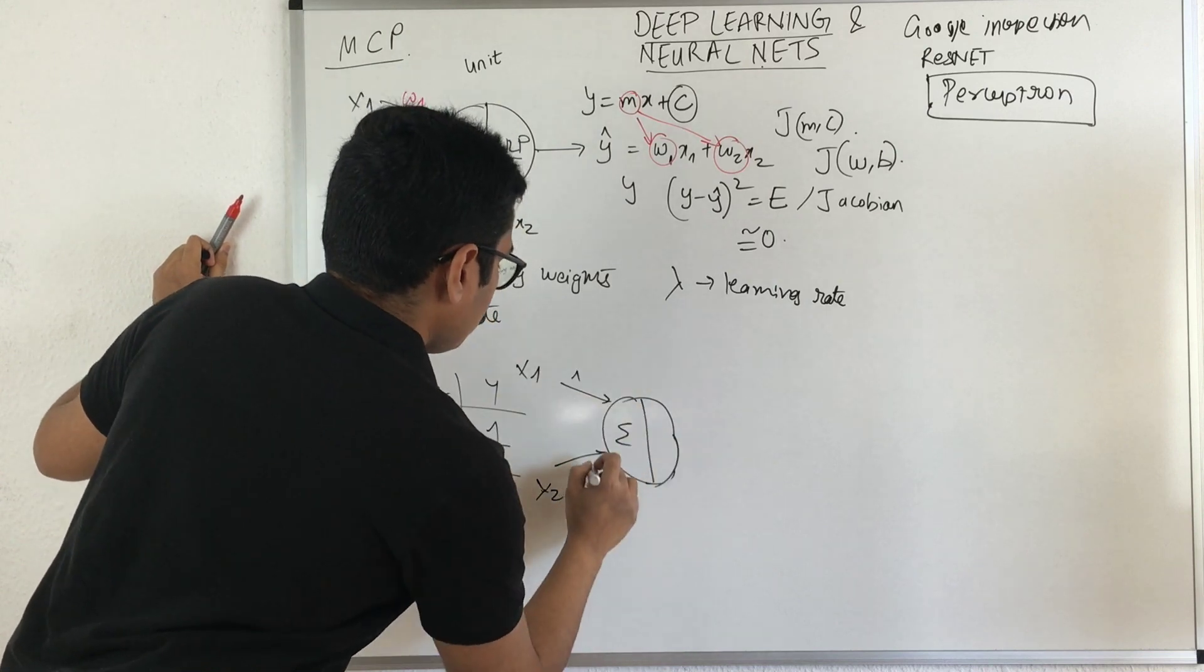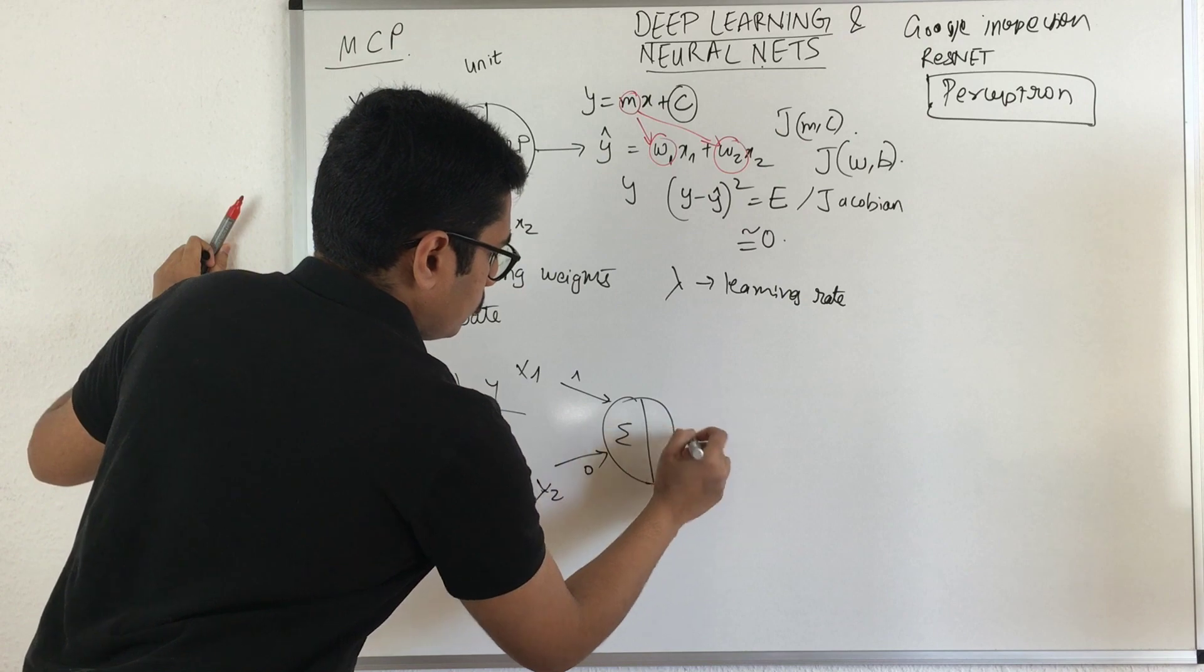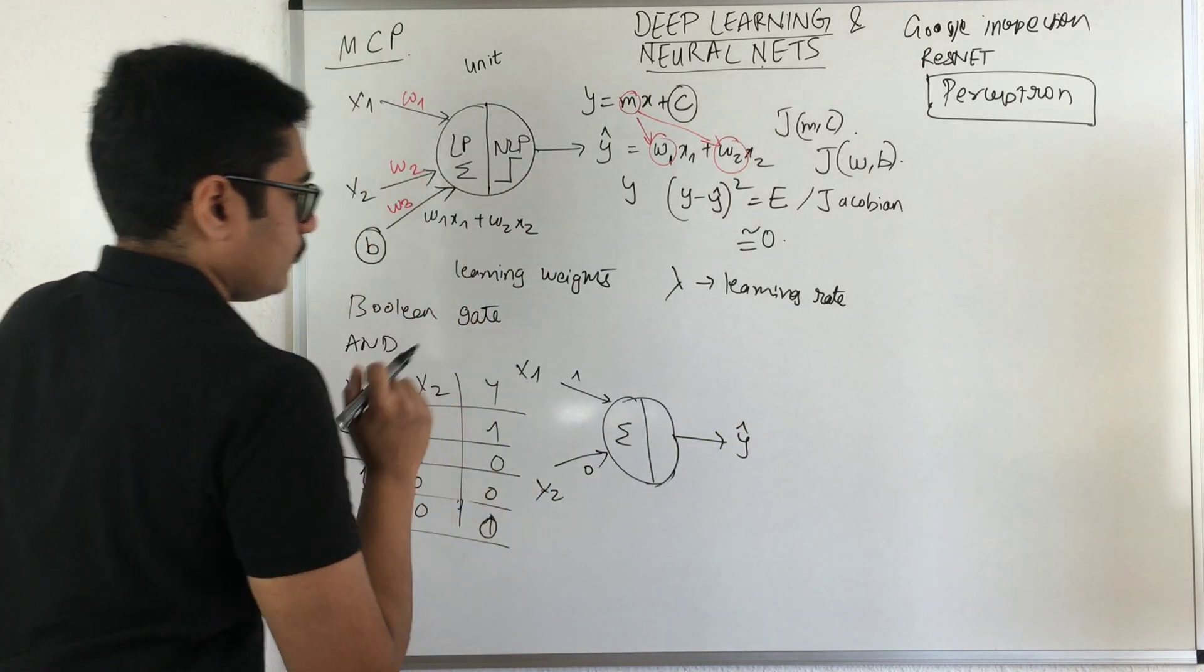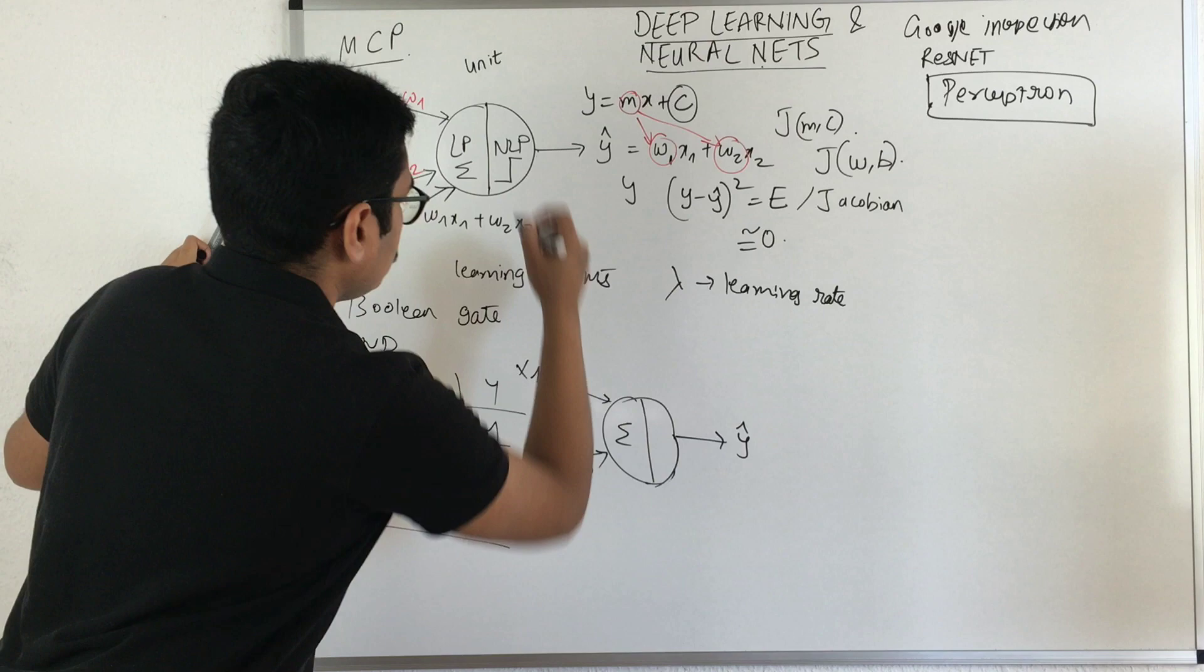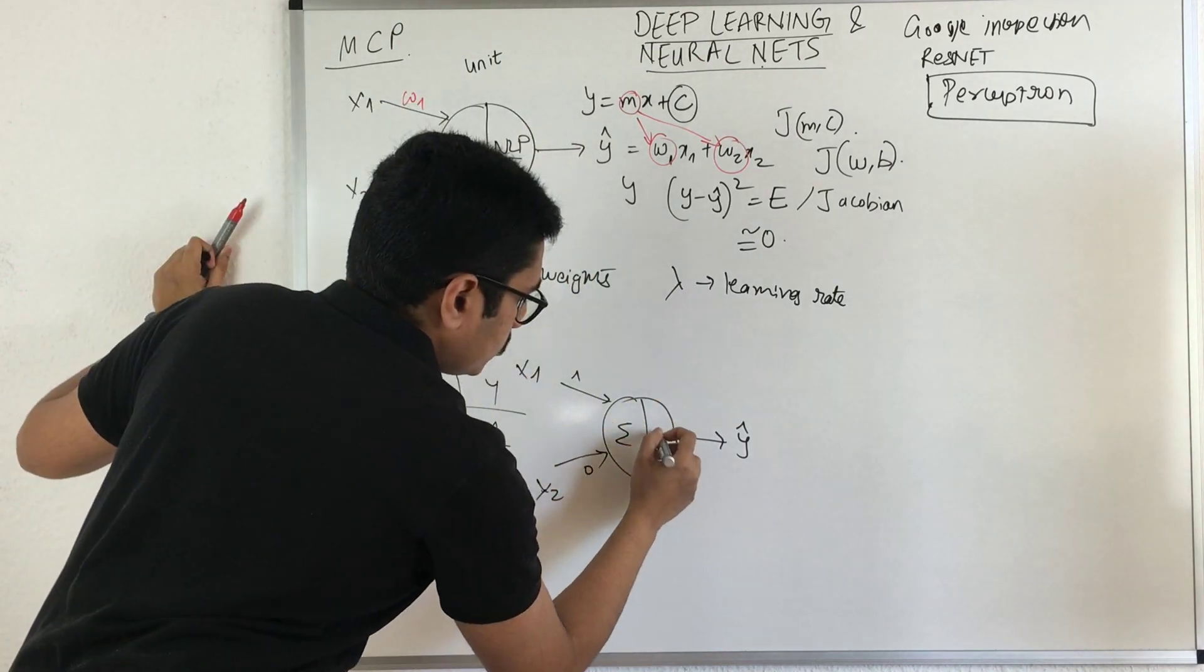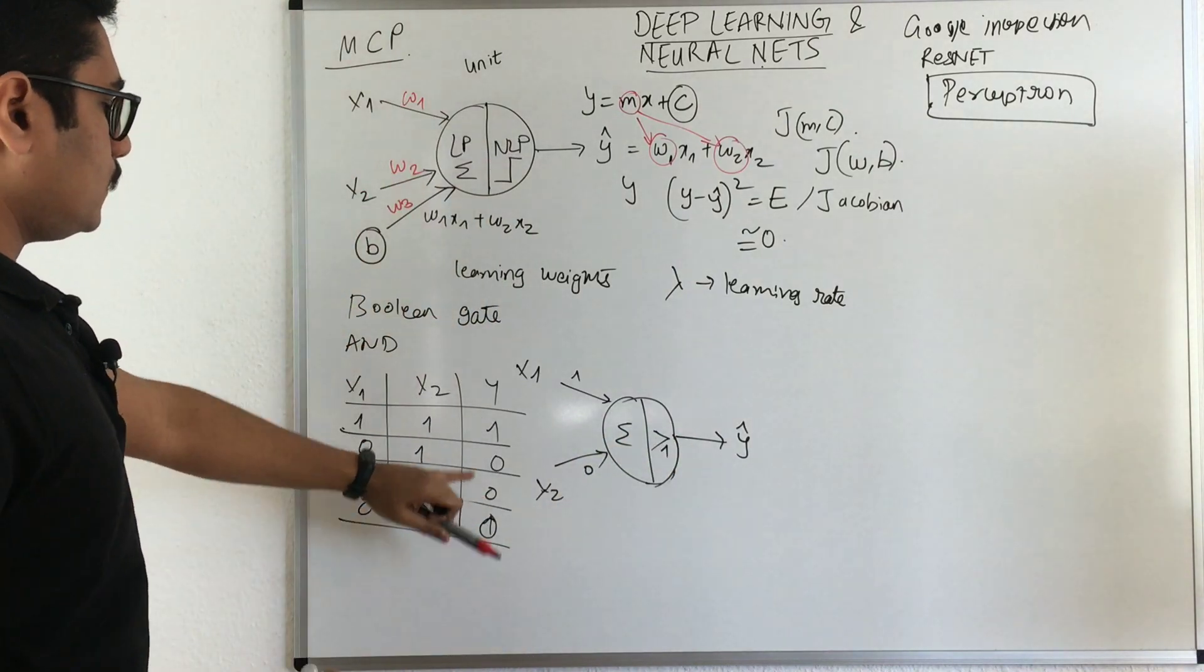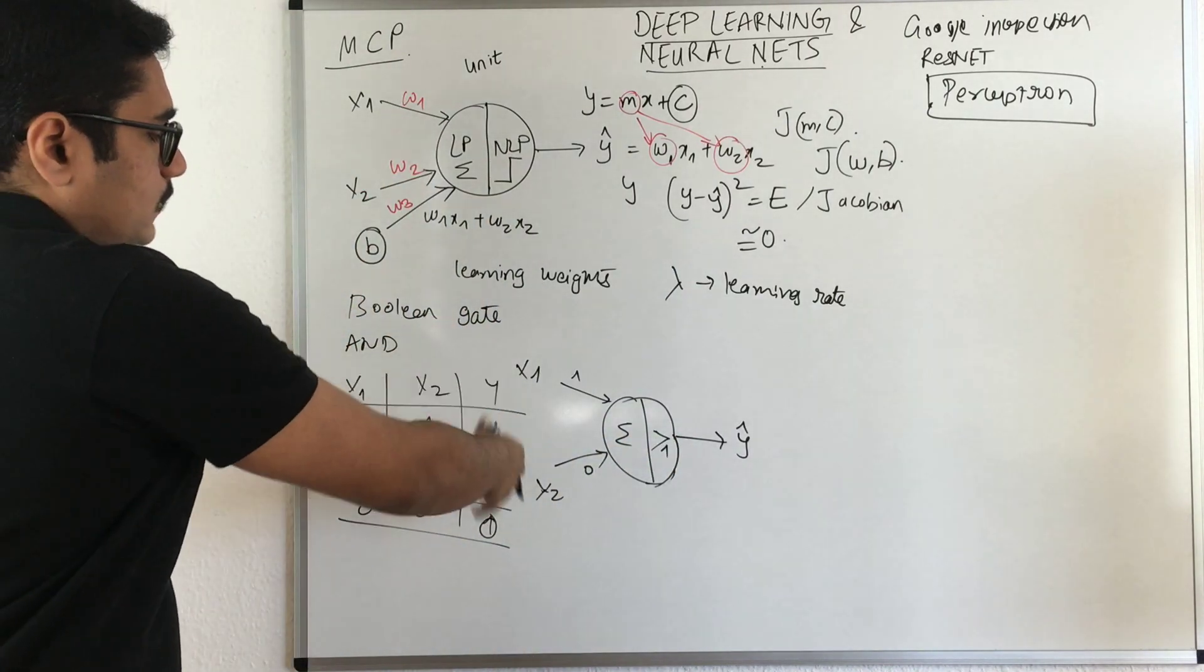You have X1 and X2. I'm not considering any weights here. Essentially this would be summation of all of this. You can consider 1 and 0, any combination would produce your output. The nonlinear part is greater than 1. If it's greater than 1, then you fire accordingly.